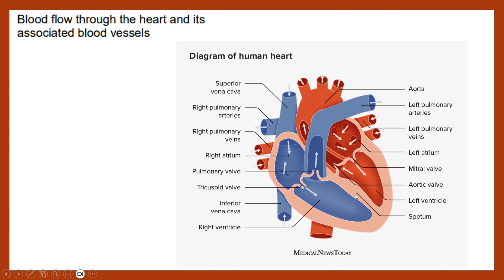There are valves because circulation is one direction. We have valves to prevent the backflow into the chambers or from the vessels. As the blood moves from the right atrium into the right ventricle, it will pass through the first of the atrioventricular valves — AV valves — the tricuspid.